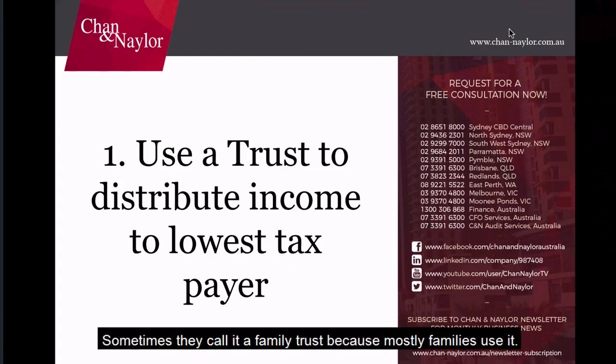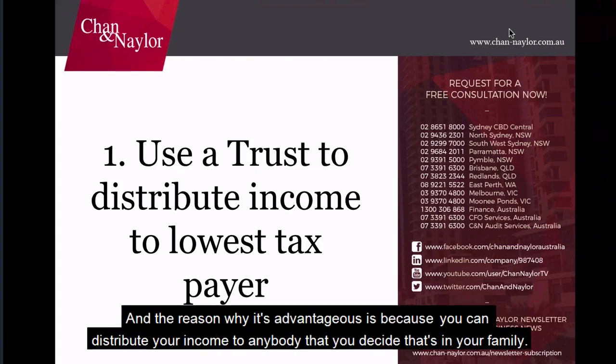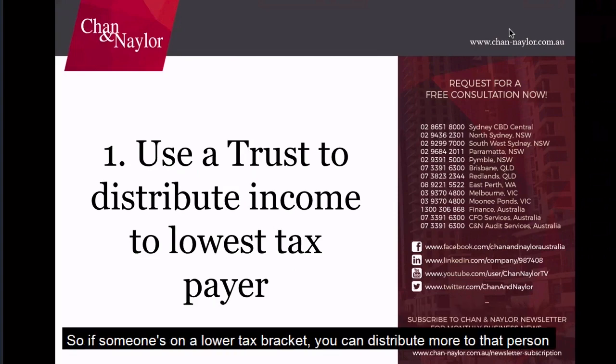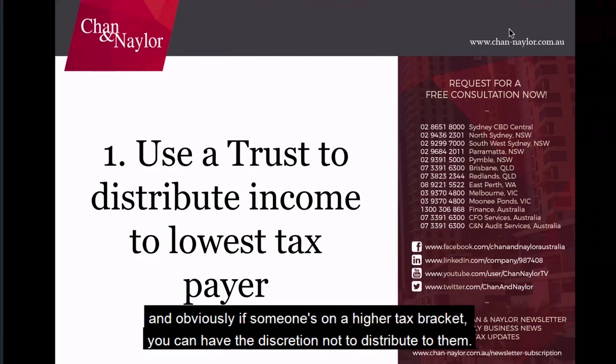Sometimes it's called a family trust because mostly families use it. The reason it's advantageous is because you can distribute the income to anybody in your family that you decide. If someone's on a lower tax bracket, you can distribute more to that person. And if someone's on a higher tax, you can, at your discretion, not distribute to them.